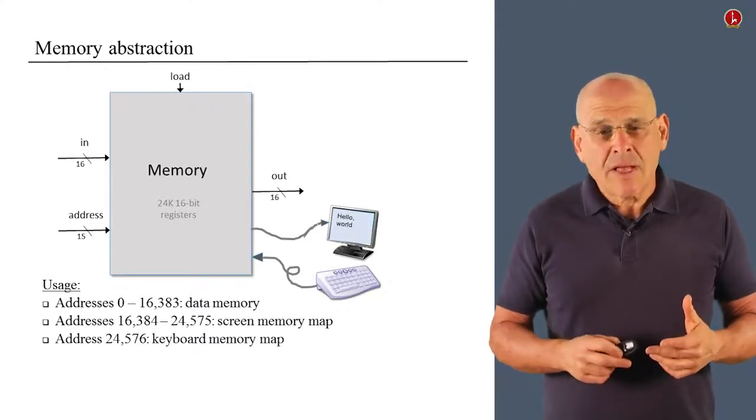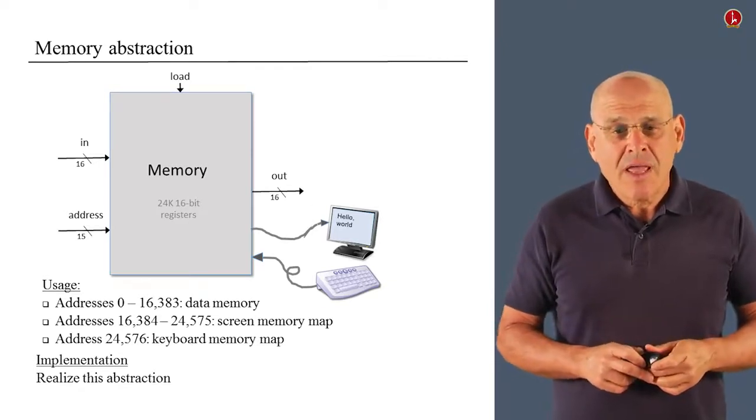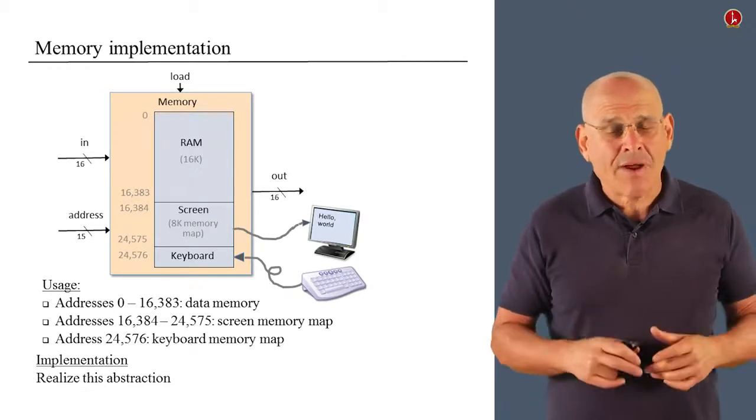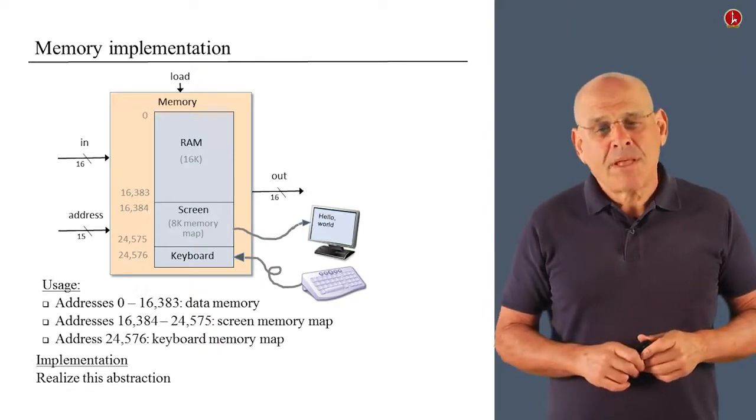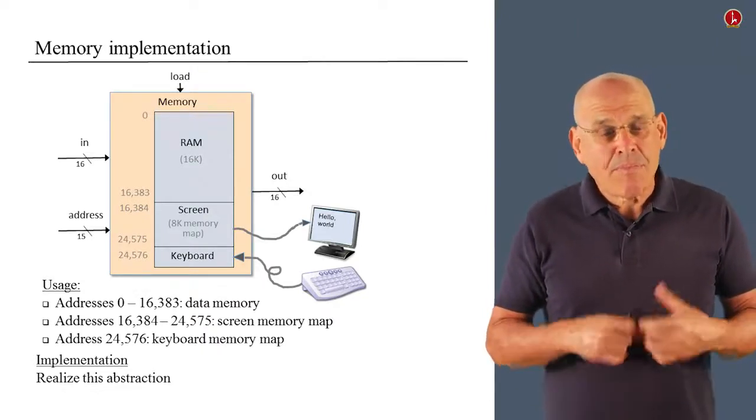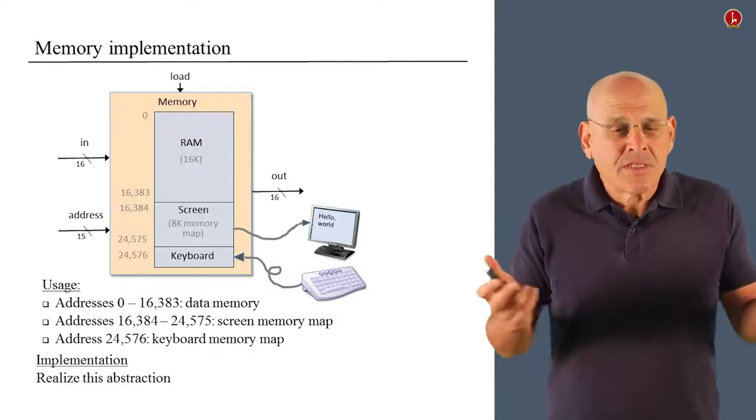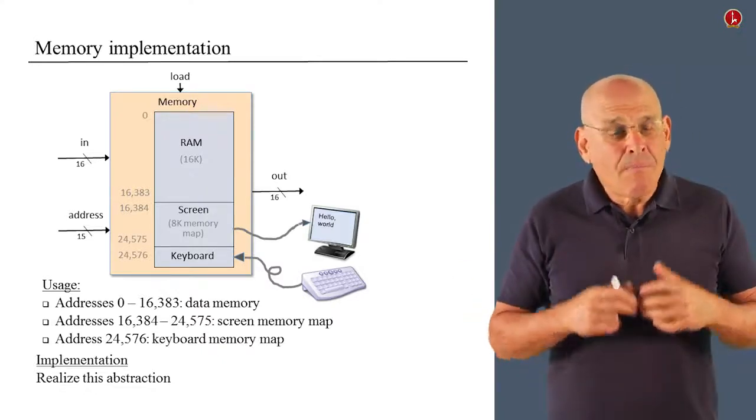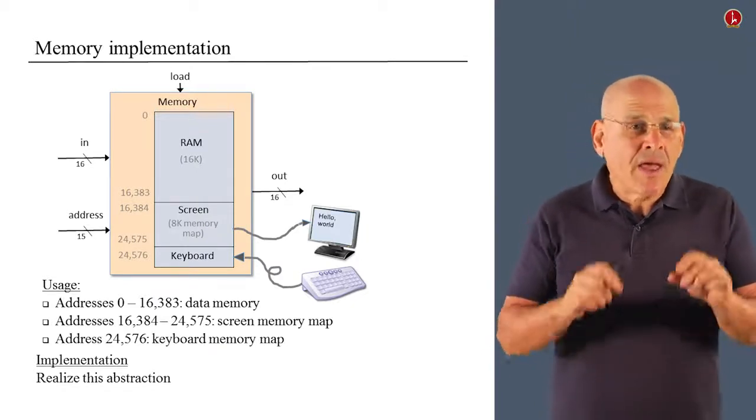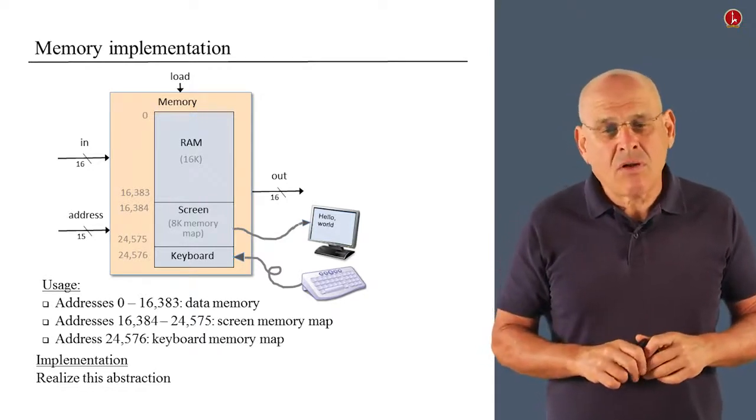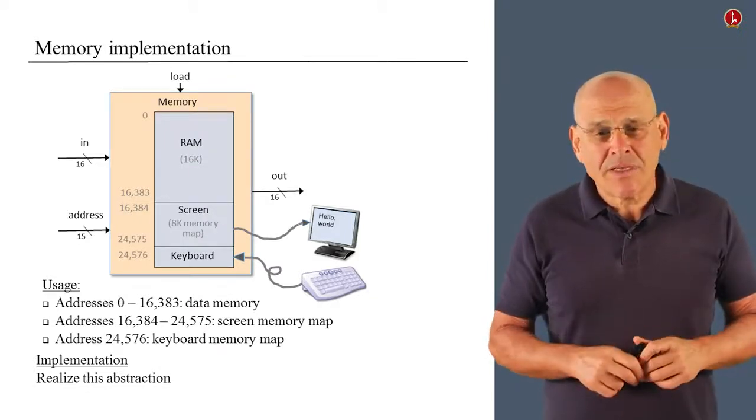So, how do we build it? Well, we have to realize this abstraction using chips that we already built before. And here is some high level diagram of this architecture. So, we have three basic chips. We have the RAM chip that we built in project three. Then we have a built-in screen chip, which essentially is just a regular memory chip. So, it's not really terribly interesting to implement it if you implemented the RAM before. But, it has the very nice side effect of refreshing the physical screen. And finally, we have a humble register called keyboard, which holds the currently pressed, the scan code of the currently pressed key.